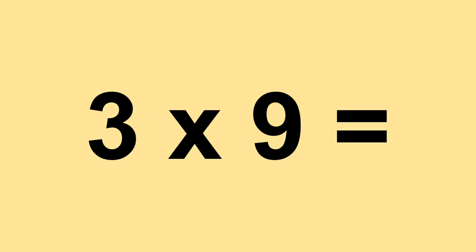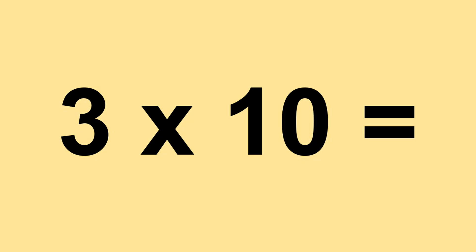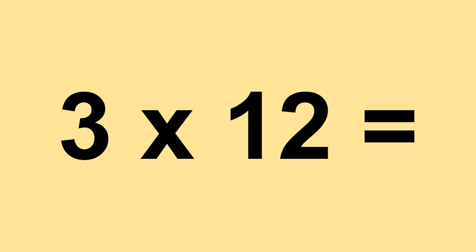3 times 9 equals 27. 3 times 10 equals 30. 3 times 11 equals 33. 3 times 12 equals 36.